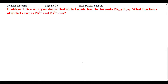This is NCERT problem 1.16 from page number 33 of the Solid State chapter. The problem states: analysis shows that nickel oxide has the formula Ni₀.₉₈O₁.₀₀. What fractions of nickel exist as Ni²⁺ and Ni³⁺ positive ions?